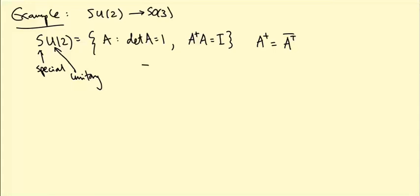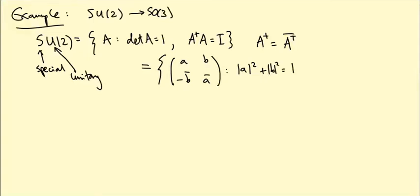It turns out there's a very easy way to characterize and write down all the matrices in SU(2). They are the matrices of the form [A, B; −B̄, Ā] where A and B are complex numbers such that |A|² + |B|² = 1.